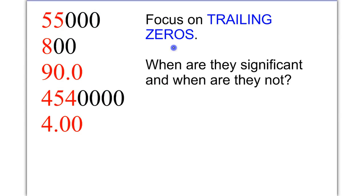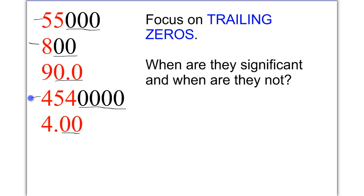We're going to focus on the trailing zeros. Trailing zeros are zeros trailing after the last non-zero number. These are my trailing zeros — it's all the zeros trailing after the last non-zero number. So when are they significant and when are they not? Notice that in these examples the trailing zeros are not significant. There's no decimal present in any of those numbers — that's why the trailing zeros are not significant.